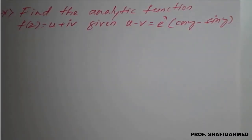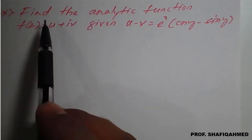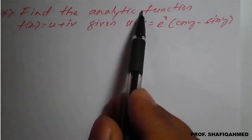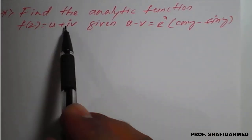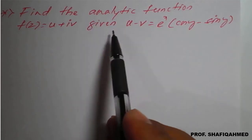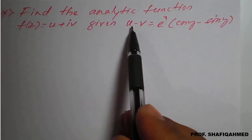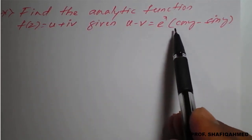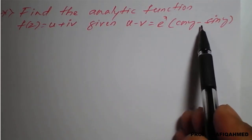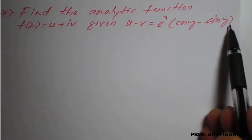Hello everyone. In this lecture we will see a problem on analytic function. The problem is: find the analytic function f(z) = u + iv, given that u minus v equals e raised to x into cos y minus sin y.